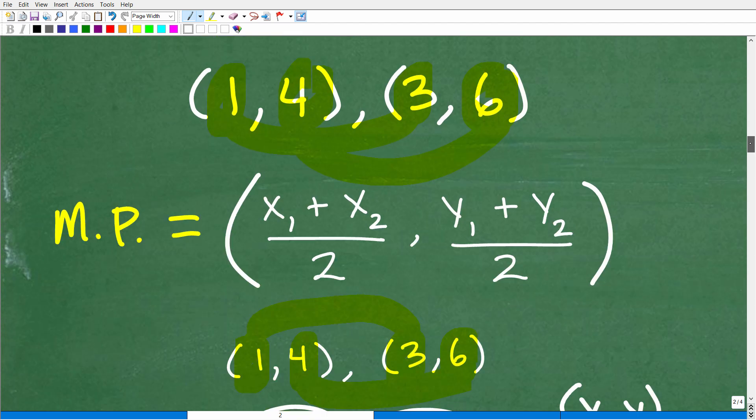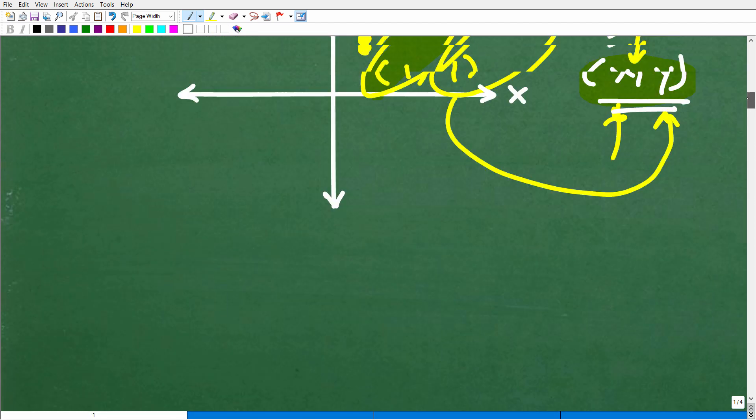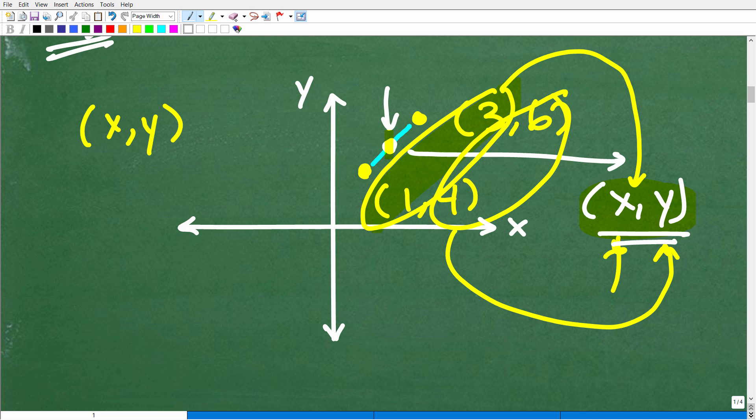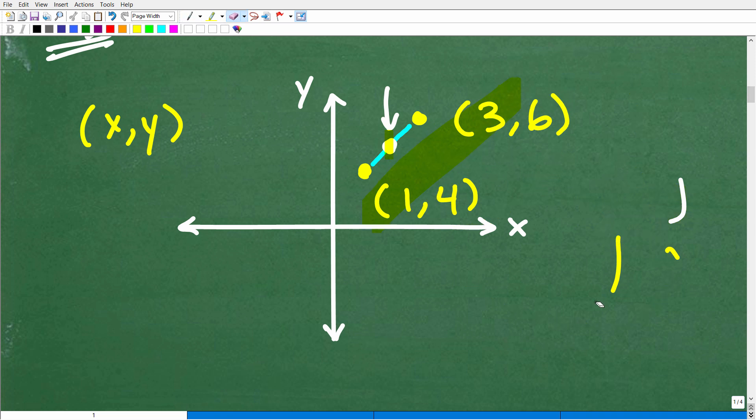So going back up here to our graph, you can kind of see this right here. Well, boy, let me kind of erase this because this is very confusing right now. So let's kind of take the confusion off. So 2, 5 is this point right here. And let's just see if that makes sense. Well, if this is 1 right there and this is 3 right there, look,